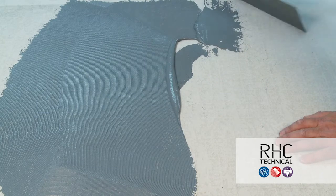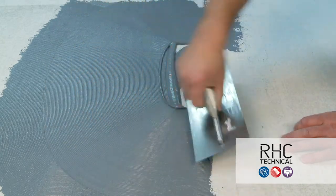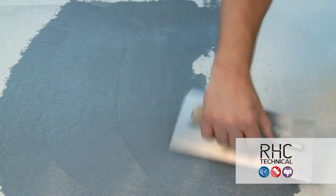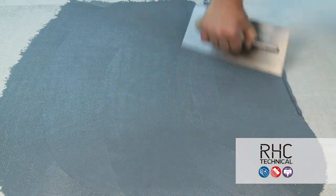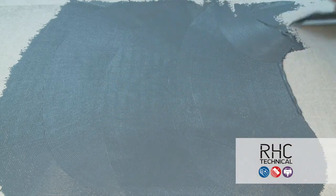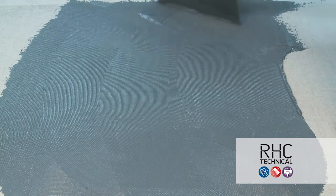ASD800 is an acrylic wet set ESD adhesive designed for installation of ESD vinyl and rubber flooring materials. It's water-based, low VOC and solvent-free, and is recommended for installations on porous substrates only.